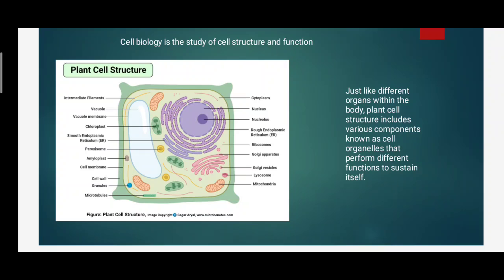The cell organelles include the nucleus, nucleolus, rough endoplasmic reticulum. The whole cell is full of cytoplasm, which is the liquid structure in the cell. The cell is covered by the cell wall. Other organelles include Golgi vesicles, which are circular in shape, mitochondria, chloroplasts, and granules. These are the different cell organelles present in plant cells.